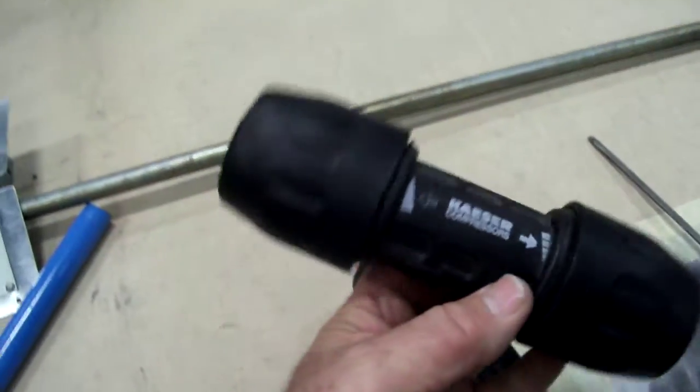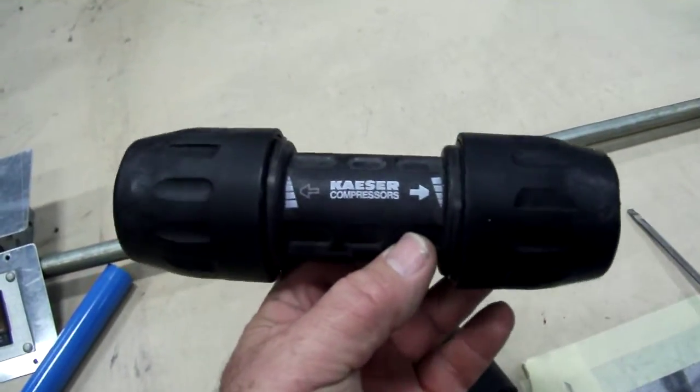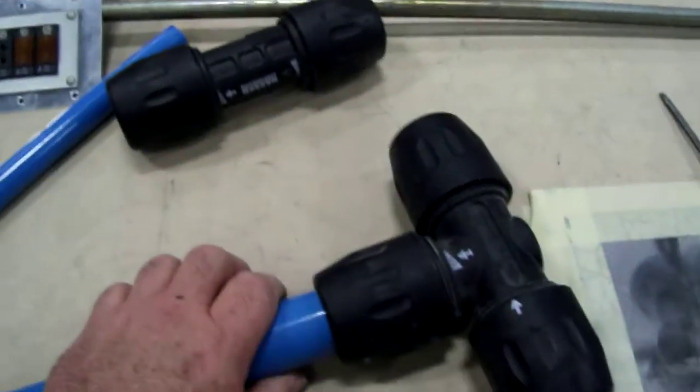This is a T, that is a straight fitting to pipe together. You also have 90s.